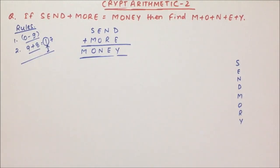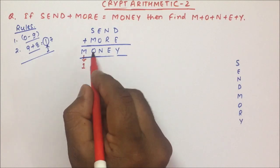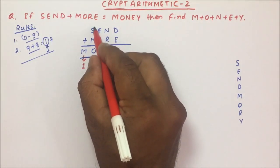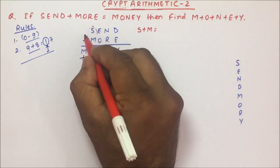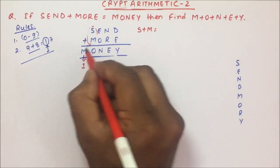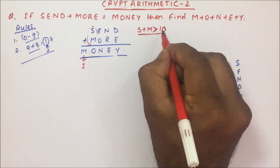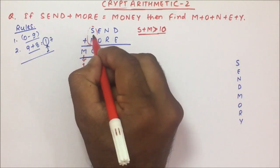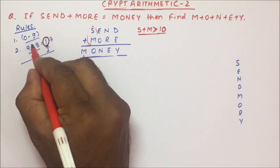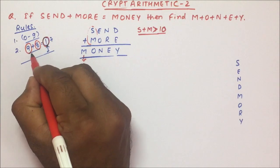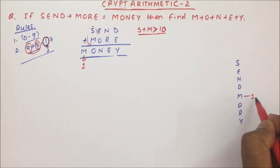What will be the value of M? The value of M will be 1. M is nothing but the carry-over from the addition of S plus M. So S plus M, when added, whatever carry-over results is the value of M. We can say S and M addition will definitely be more than 10 — that is the only reason there will be a carry-over. The maximum carry-over is 1, because 9 plus 8 is 17, so the maximum carry is 1. Therefore M equals 1.